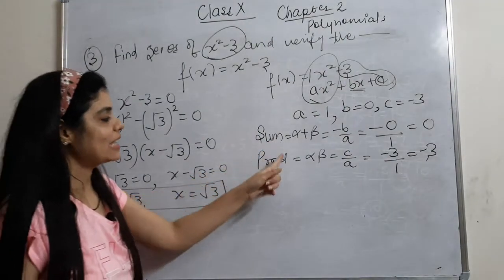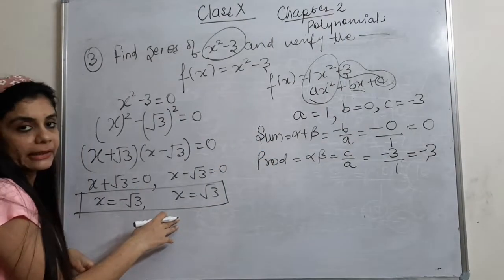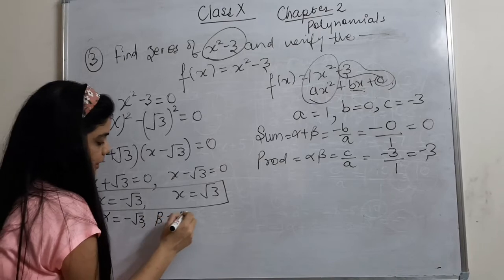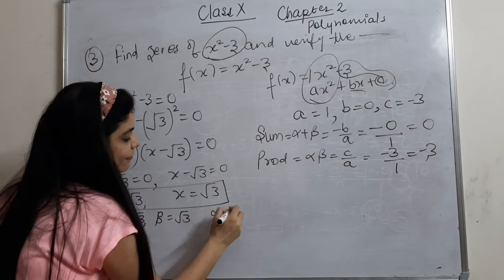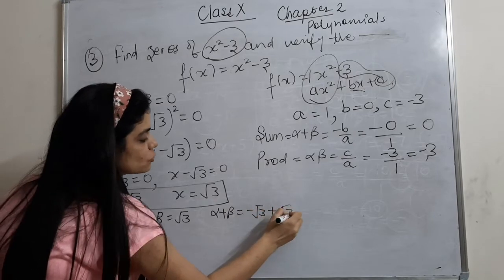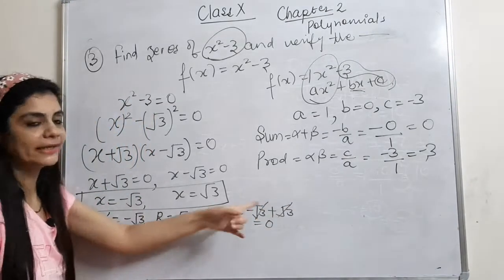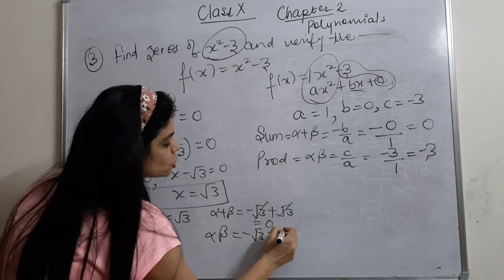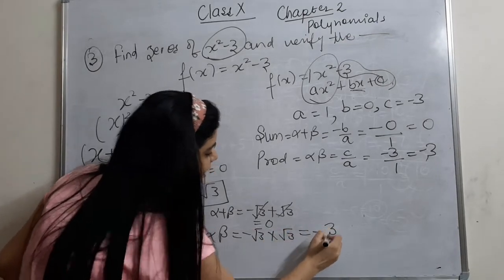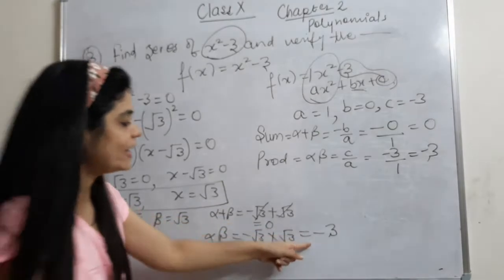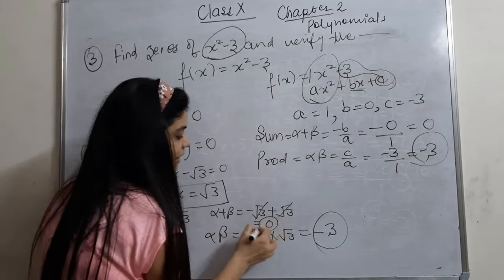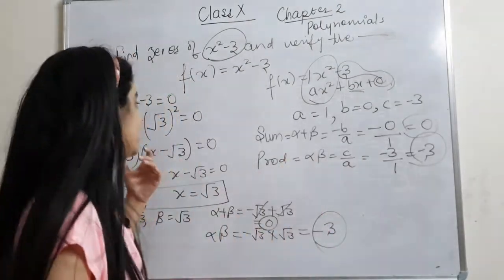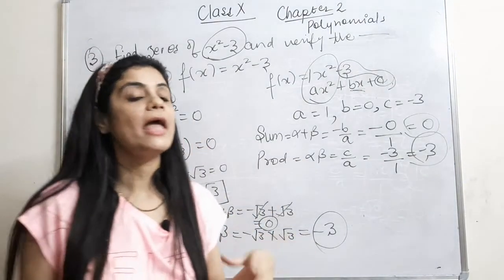Now verifying from the zeros directly: alpha + beta = (−√3) + (√3) = 0, which matches. And alpha × beta = (−√3)(√3) = −3, which also matches. Hence our verification is complete — we matched the sum and product from both sides, and hence verified.